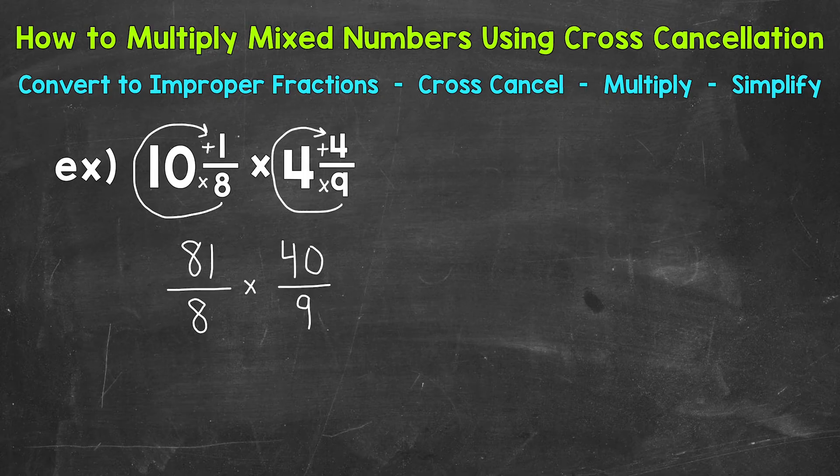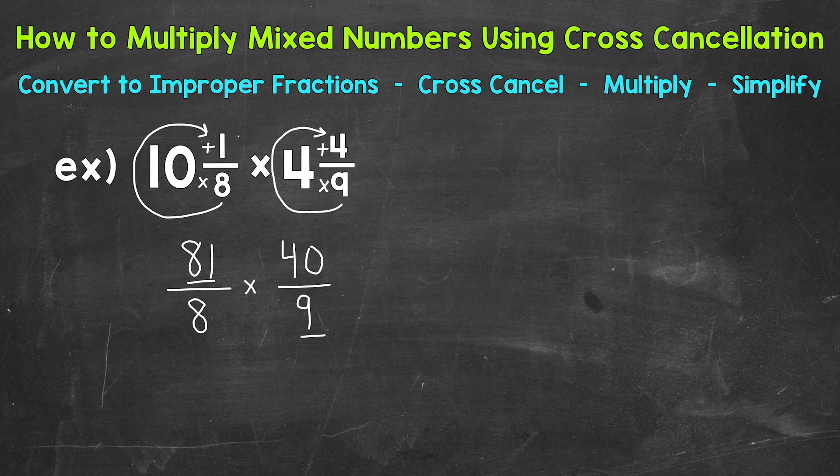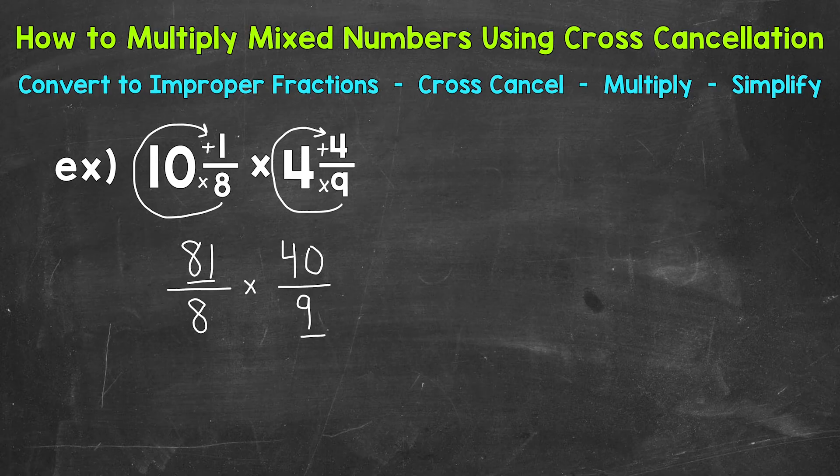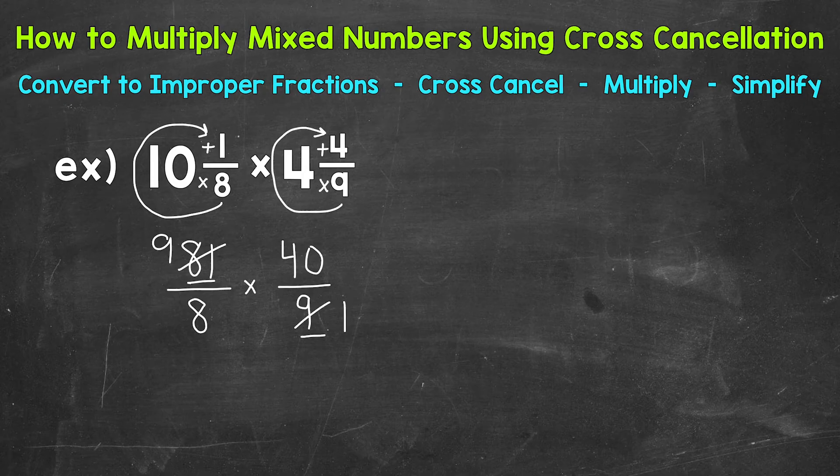For example, we have 81 and 9. So 81 right here and 9 diagonally. We can look for common factors there. A common factor between 81 and 9 is 9. So what we can do, we can divide both of those by 9. So let's cross them out and divide them both by 9. 81 divided by 9 is 9. And then 9 divided by 9 is 1. So you can see that gave us some smaller numbers in value and easier numbers to work with.